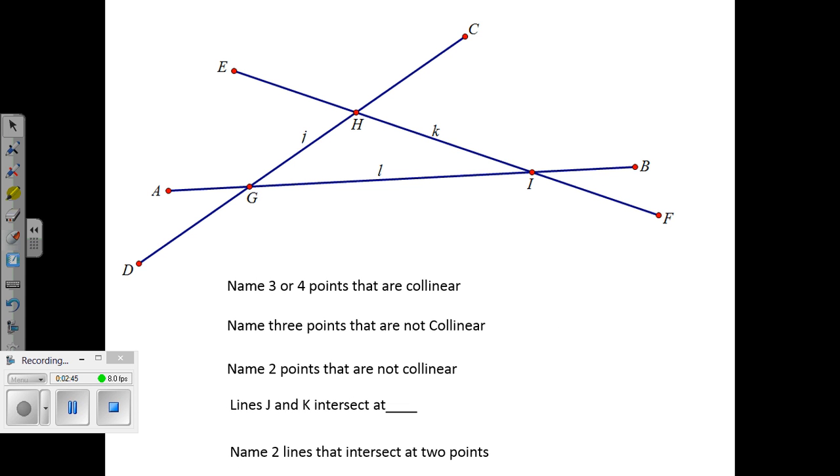So, here's some questions for you to answer. You should be able to answer these without a lot of difficulty. Name three or four points that are collinear, points all on the same line: A, G, I, and B. Also E, H, I, and F. They're two sets of collinear points.